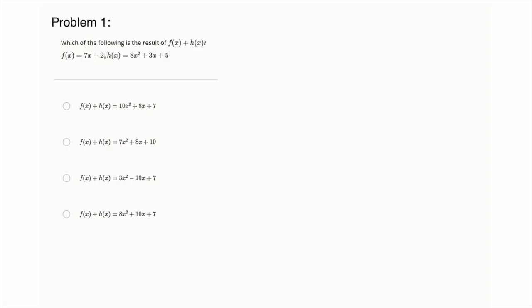All right, so for our first problem, problem one, it says, which of the following is the result of f(x) + h(x). f(x) = 7x + 2, h(x) = 8x² + 3x + 5. So this is a function problem, right? It wants us to add these two functions, which really just means to simplify and combine like terms.